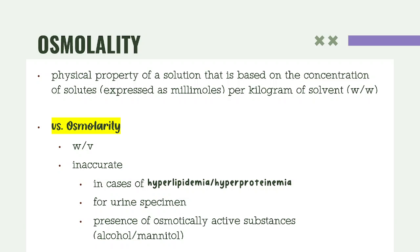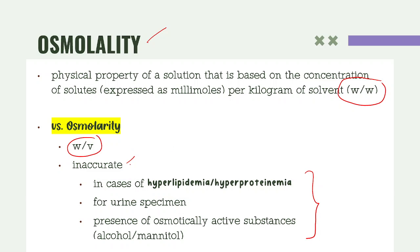Now let's move on to osmolality. From your laboratory mathematics, recall W over W and W over V. Osmolality refers to the concentration of solutes per kilogram of solvent, whereas osmolarity is the weight of solute over volume. Between the two, it is better to use osmolality — especially since osmolarity may be inaccurate if the patient has hyperlipidemia or hyperproteinemia, or if there are osmotically active substances like alcohol or mannitol.